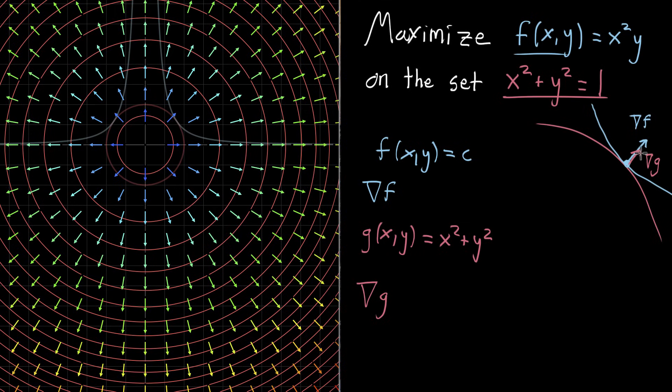And the way that we're going to write this in formulas is to say that the gradient of f evaluated, let's see, evaluated at whatever the maximizing value of x and y are. So we should give that a name probably. Maybe x sub m, y sub m.